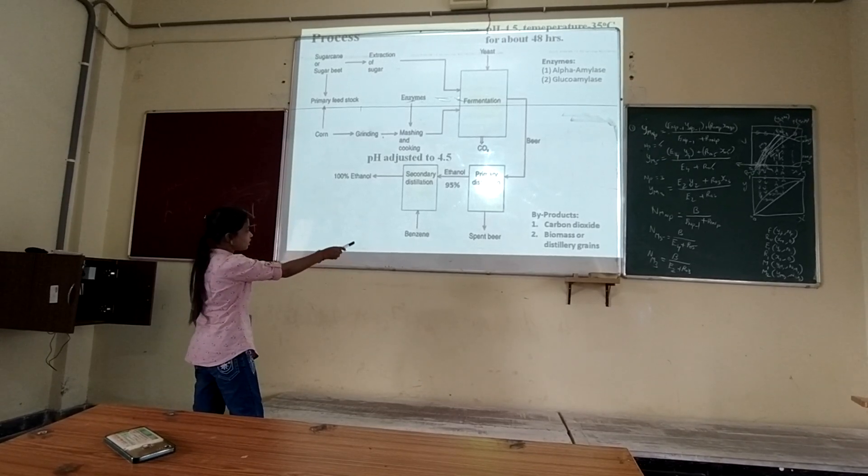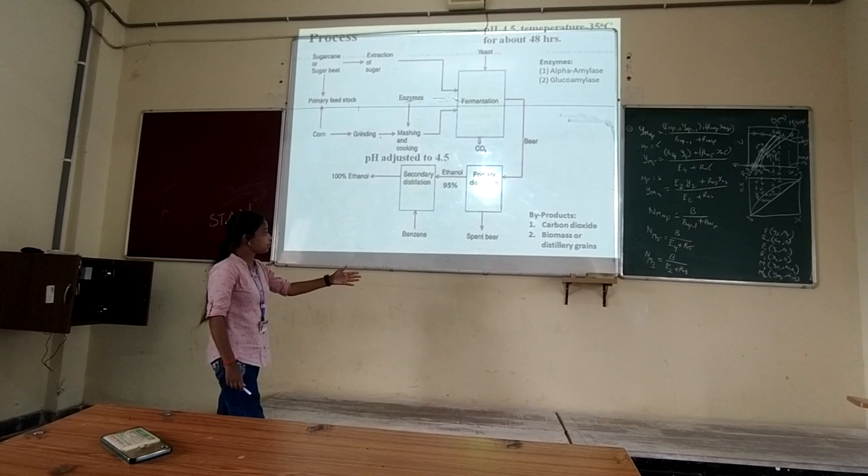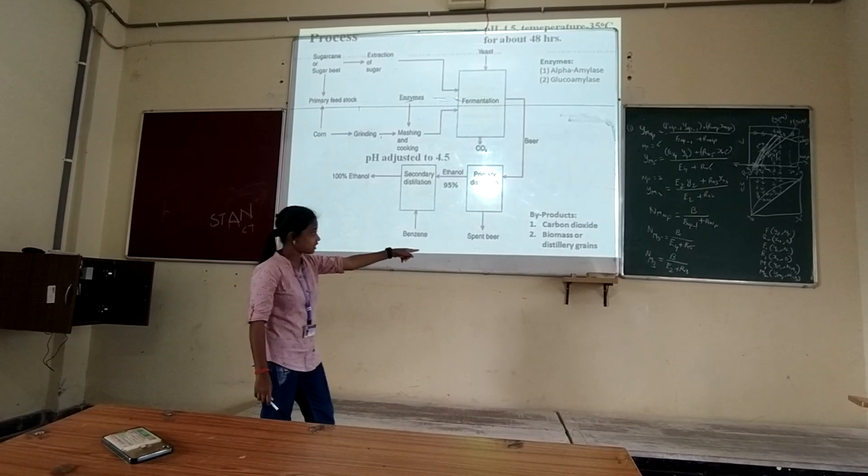Beer, spent beer, sculptium, sterile glands, etc., which is made by carbon dioxide, biomass, sterile glands.